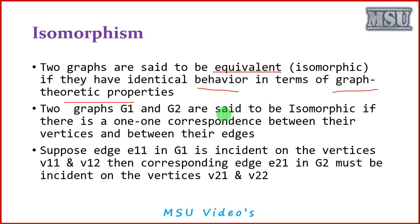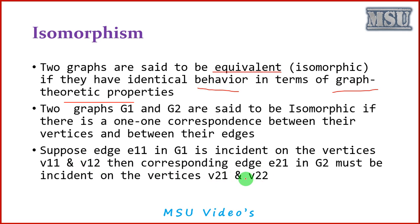Two graphs G1 and G2 are said to be isomorphic if there is a one-to-one correspondence between their vertices and between their edges — one-to-one correspondence meaning there must be an equal number of vertices and equal number of edges. If edge E1 in G1 is incident on vertices V11 and V12, then the corresponding edge E21 in G2 must be incident on vertices V21 and V22. So if there is an edge connecting any two vertices in graph 1, then there must be another edge connecting the same two corresponding vertices in graph 2. Then you can say that the graph is isomorphic.